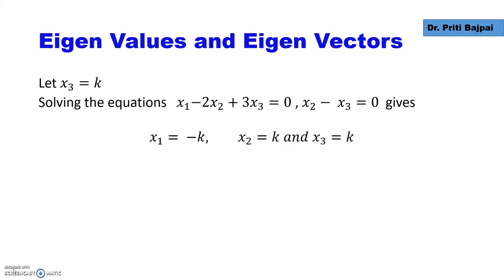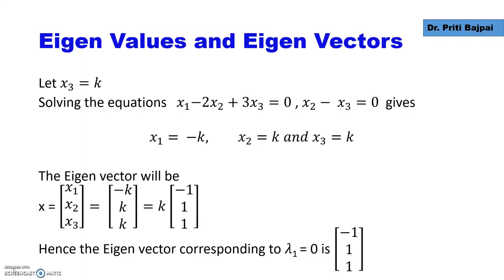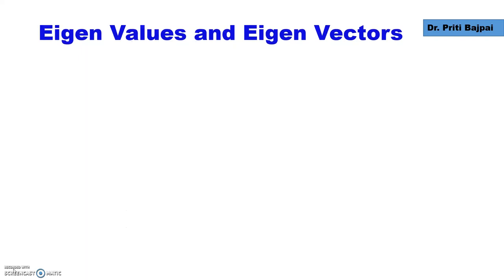This gives x1 equal to minus k, x2 equal to k, and x3 equal to k. The eigenvector is [minus k, k, k]. Pulling out k, we get the corresponding eigenvector as [minus 1, 1, 1].